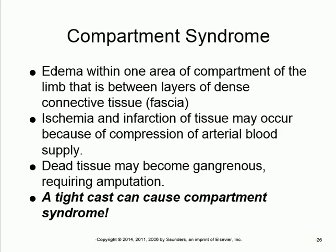Compartment syndrome occurs when the cast is too tight, interfering with blood supply. A cast should not be too tight or too loose — if too tight, it restricts blood flow causing ischemia, edema, dead tissue, and potentially gangrene. If gangrene occurs, unfortunately amputation is required. If the cast is too loose, it causes misalignment — a separate problem.